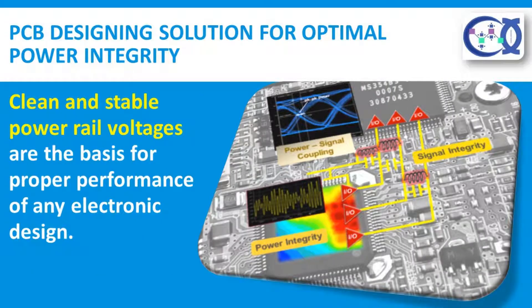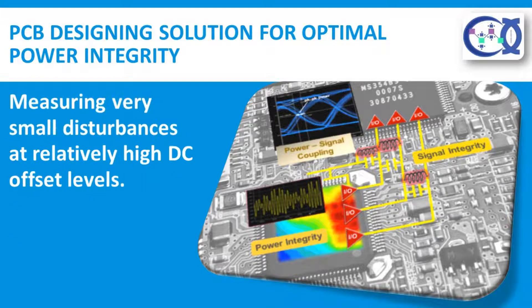Clean and stable power rail voltages are the basis for proper performance of any electronic design. The continuing demand for higher performance, higher level of integration, and lower power consumption drives supply voltages down, making voltage tolerances tighter and power rail qualification a challenging task. Qualifying the power supply for sensitive analog receiver circuits means measuring very small disturbances at relatively high DC offset levels.